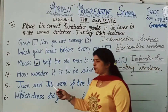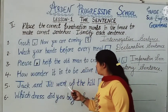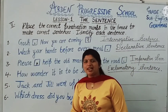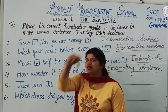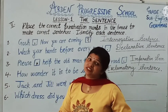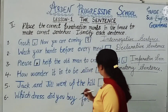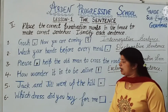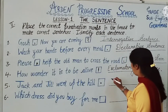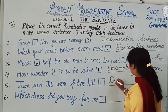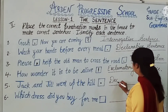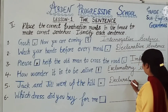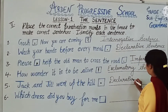Fifth one: Jack and Jill went up the hill. In this, we are stating something, so a full stop will come. This will be a declarative sentence.